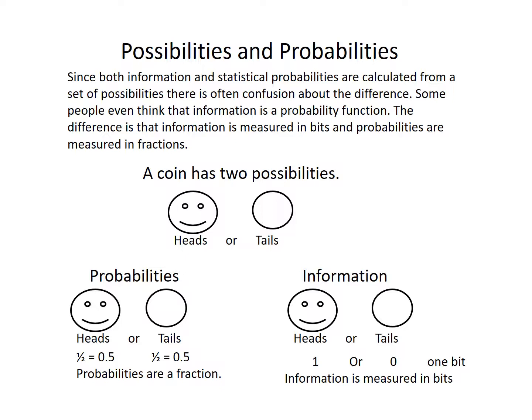Possibilities and probabilities. Since both information and statistical probabilities are calculated from a set of possibilities, there is often confusion about the difference. Some people even think of information as a probability function. The difference is that information is measured in bits and probabilities are measured in fractions. For example, a coin has two possibilities — heads or tails. In terms of probabilities, the probability of it turning up heads is one out of two, or 0.5. Probabilities are a fraction. On the other hand, with information, we can code heads with a one and tails with a zero, which makes one bit. Information is measured in bits.